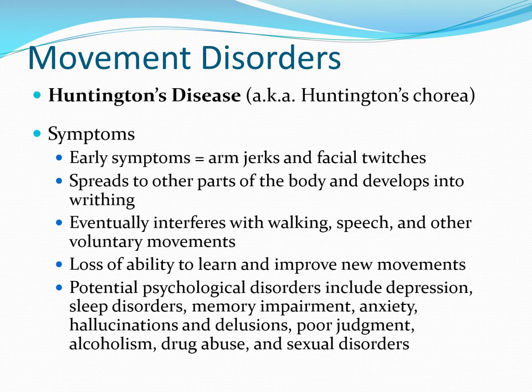The other movement disorder discussed in the textbook is Huntington's disease, sometimes called Huntington's chorea — 'chorea' meaning 'to dance,' a pejorative term for the unwanted movements involved. Early on there are jerks and twitches that spread to other parts of the body and develop into writhing. Eventually, people also have difficulty with voluntary movements like walking, speaking, and typing, as well as difficulty learning and improving new movements.